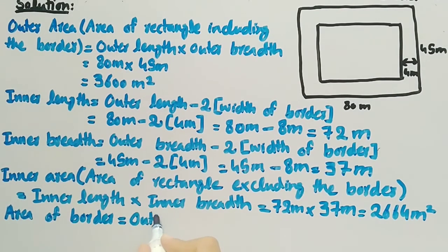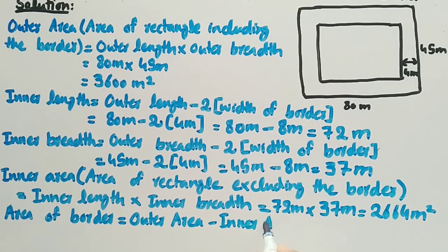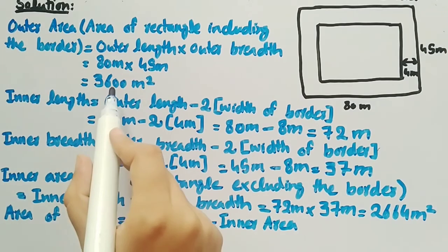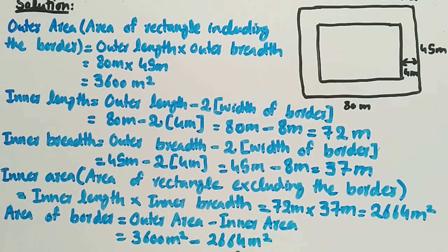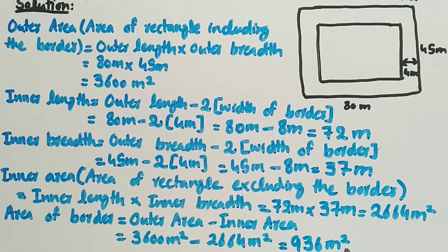Finally, we will find the area of border, that is equal to outer area minus inner area. Substituting the values we get outer area 3600 meter square minus inner area 2664 meter square. Subtracting 2664 from 3600 we get 936 meter square, so area of border is 936 meter square. And this is the solution of the given question.